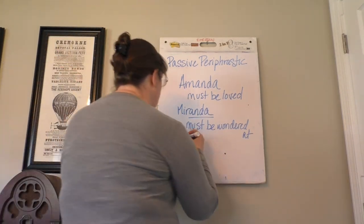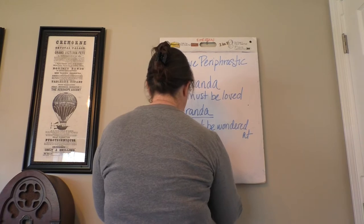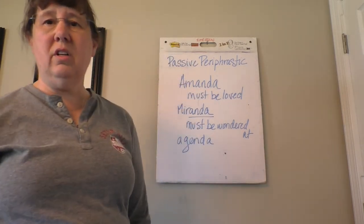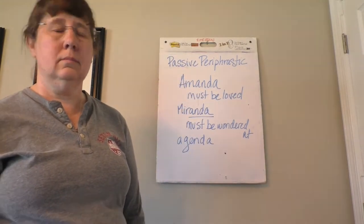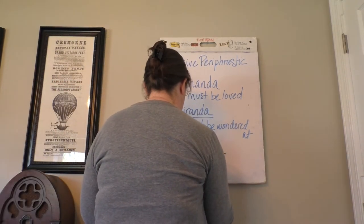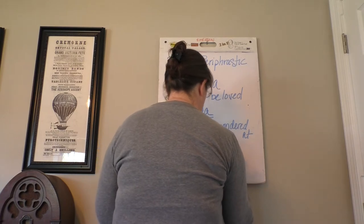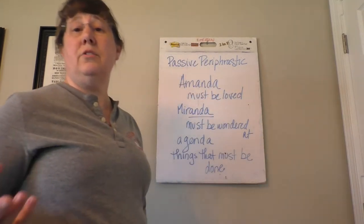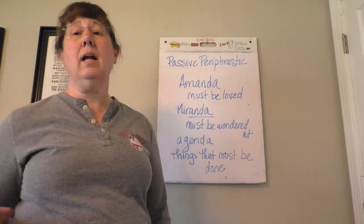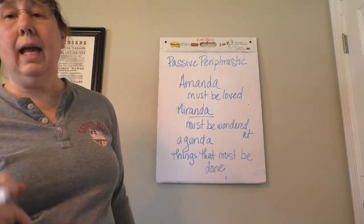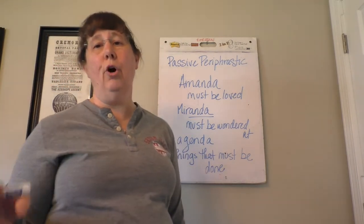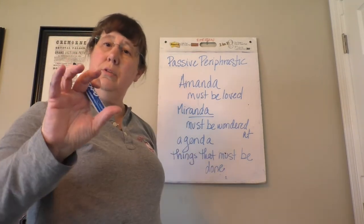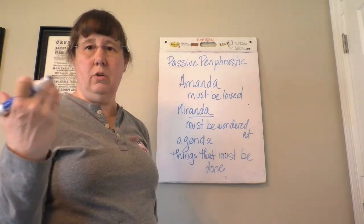The last one is not a name: Agenda. What is an agenda? An agenda is a list of things that must be done. Agere means 'to do or drive.' So we have these periphrastic forms in English. Of course, most people don't know what they are because it's English and nobody bothers to tell you. I'm telling you. These examples give you the idea that the sense of 'must' is involved in this particular verb form.